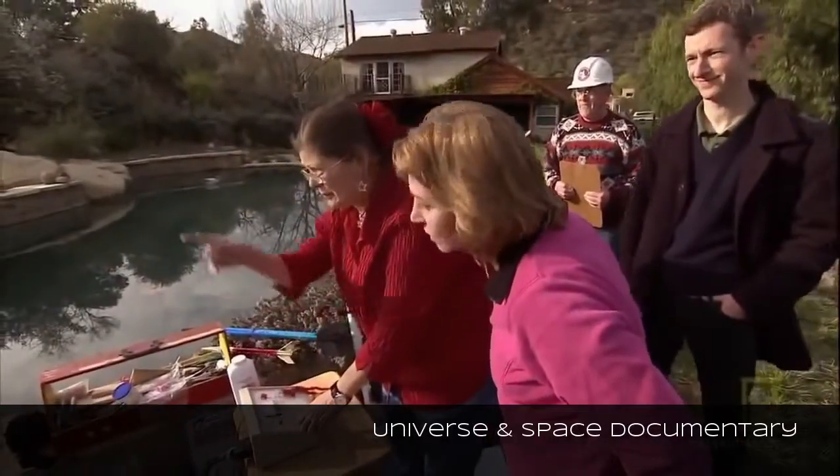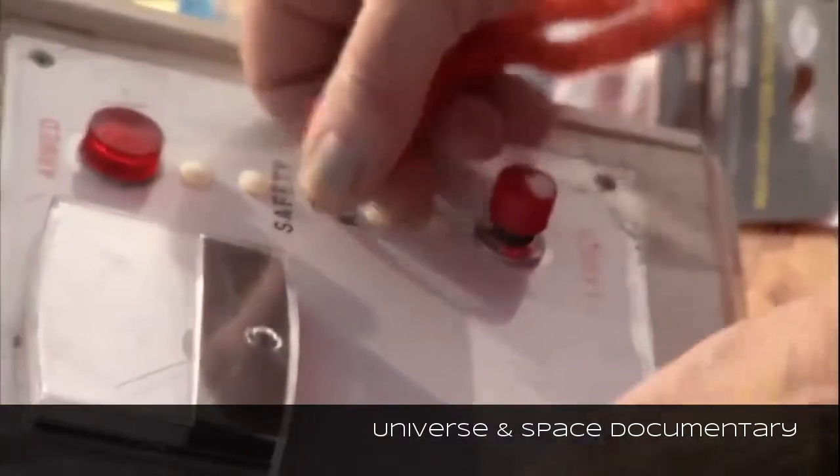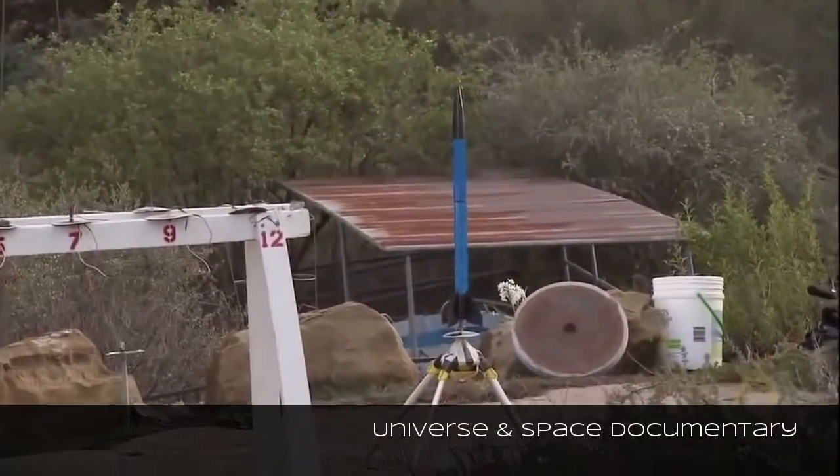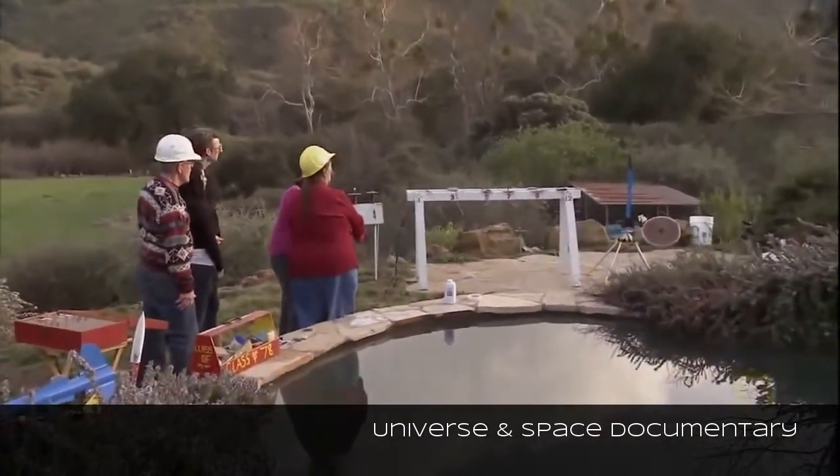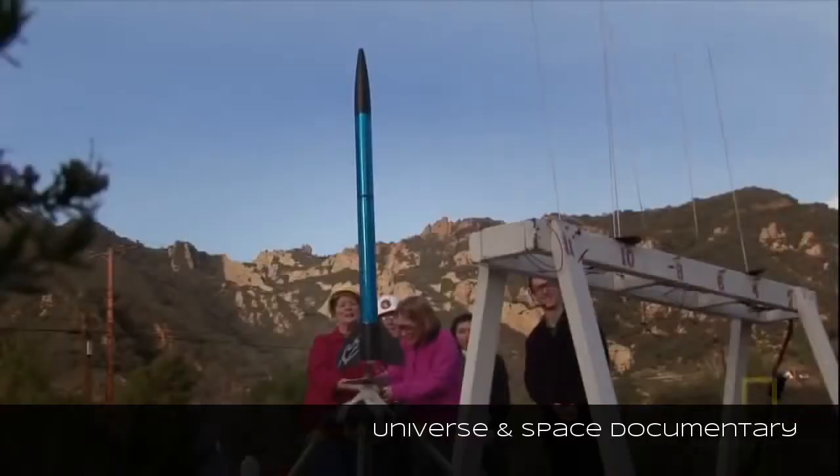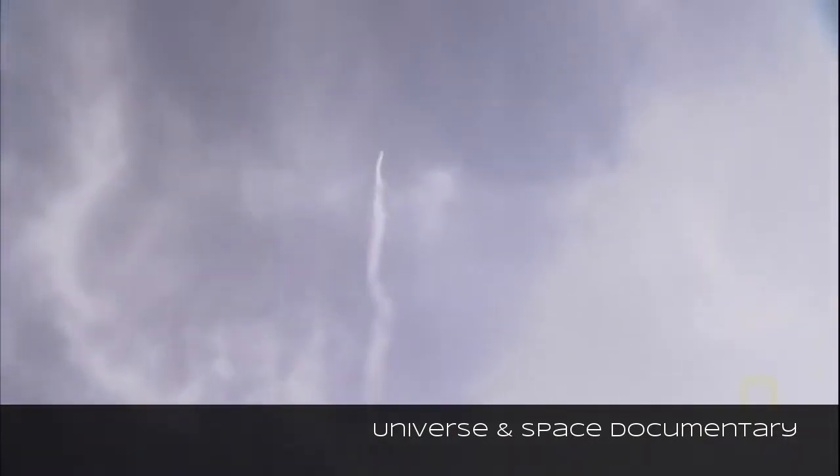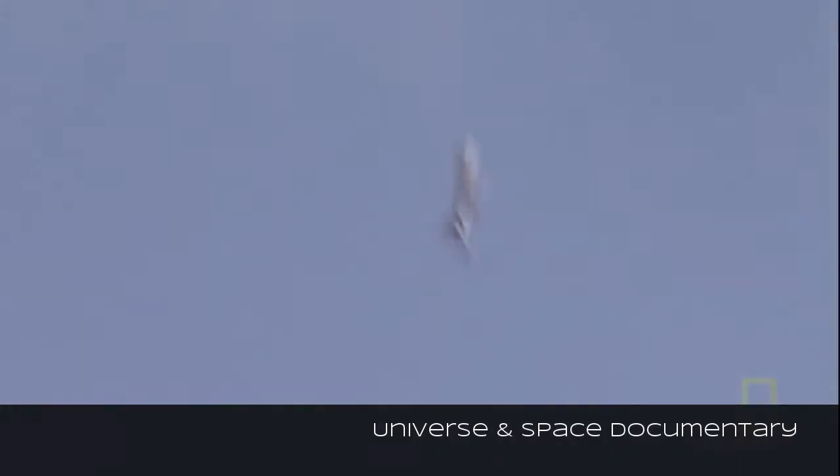An initial bang allows the rocket to overcome the pull of gravity. Eventually, when the fuel is exhausted, the rocket coasts a few feet higher, stops and is pulled back to Earth.